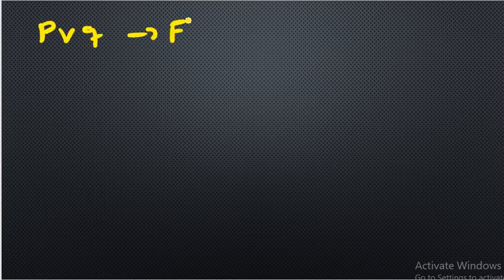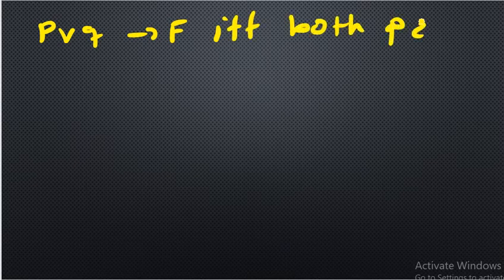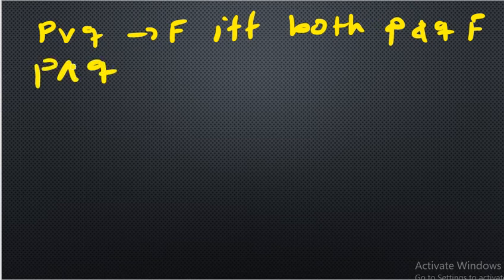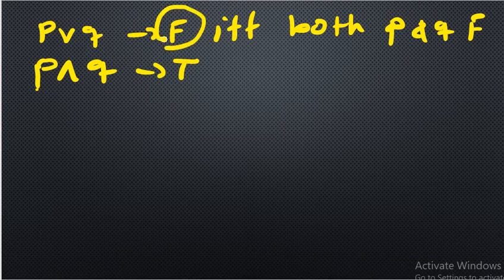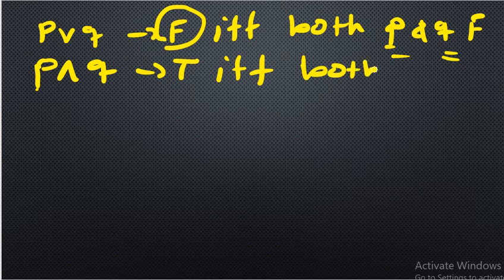In case of logical connectives, remember: p or q will be false if and only if both p and q are false — that is disjunction. For conjunction (AND), it will be true if and only if both must be true: p true and q also true.